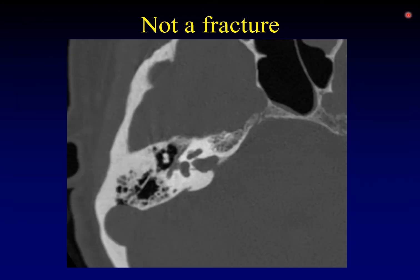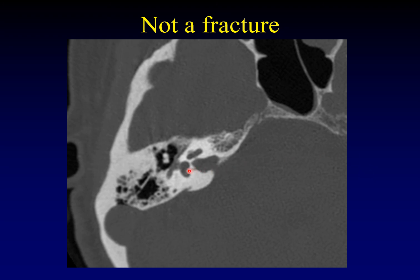Here's another normal anatomic structure not to mistake for a fracture: the innominate canal. It runs from the posterior aspect of the internal auditory canal over to the vestibule, carrying a vestibular artery. The key is making sure this line doesn't extend further — if it were a fracture, it would continue on through the anatomy. The fact that this lucency runs such a short distance in this characteristic location should clue you in that it's the innominate canal, not a fracture.